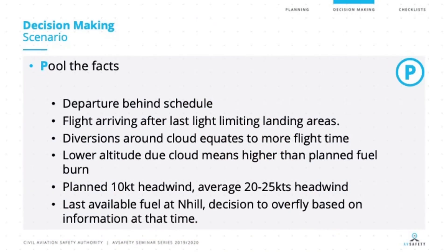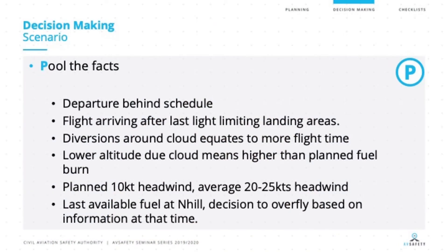We're going to apply the PILOT model to the case study from the planning module, where the aircraft flew from Portapunka in Victoria to Parafield in South Australia and had a fuel issue along the way. Pulling the facts: the aircraft departed behind schedule up to 90 minutes; arriving after last light limited landing areas and ability to get fuel; diversions and descent due to cloud and weather created more flight time and potential fuel use; the headwind planned for was only 10 knots, but the aircraft actually encountered a 20 to 25 knot headwind toward the end of the flight; and the last available fuel stop was overflown based on the information available at the time.